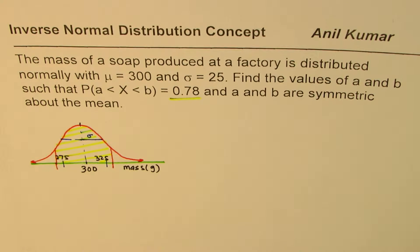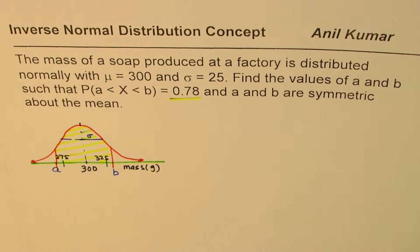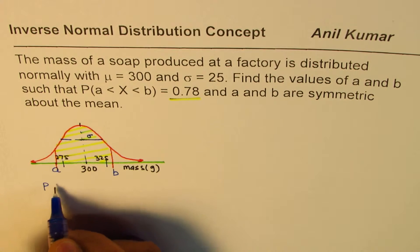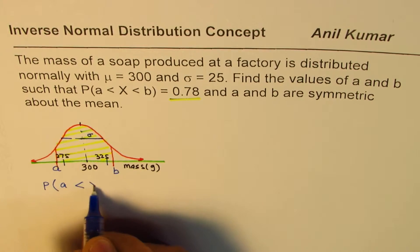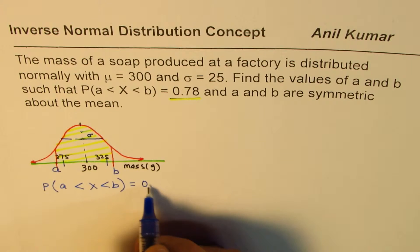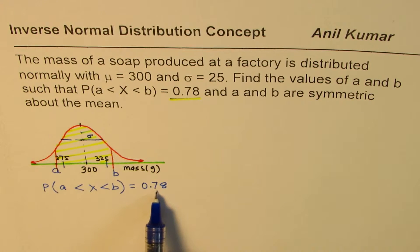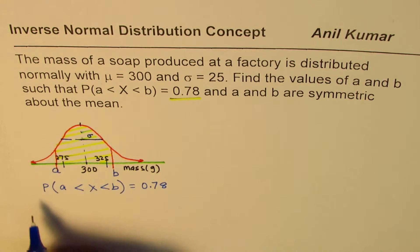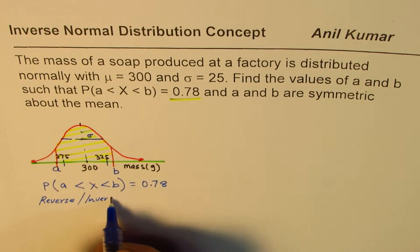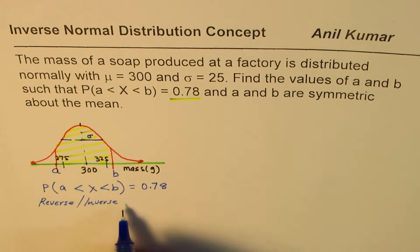A and B are these boundary values and that central area should equal 78%. We want to find the probability for the random variable X, representing mass in grams, between A and B such that the probability equals 0.78. We are given the probability and need to find the mass — that is the reverse operation, the inverse normal operation.